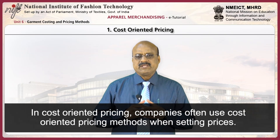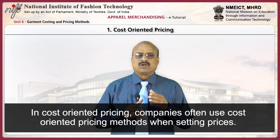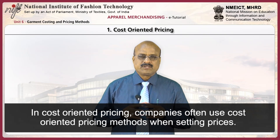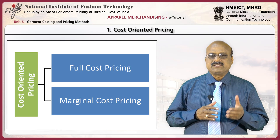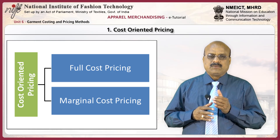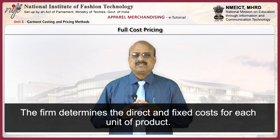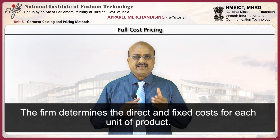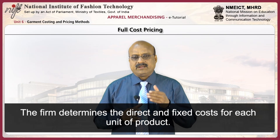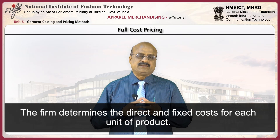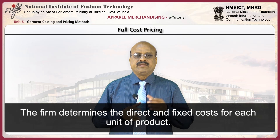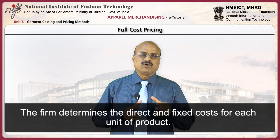In cost-oriented pricing, companies often use cost-oriented pricing methods when setting prices. Two methods are normally used: full cost pricing and direct or marginal cost pricing. Full cost pricing, also known as the cost plus method, involves considering all direct and indirect expenses and then adding a desired profit margin to get the price. It considers all the costs — so it is the full cost method — and involves adding a desired profit to the full cost, so it is also called the cost plus method of pricing.